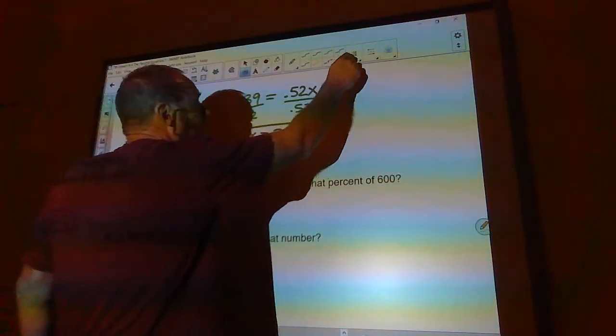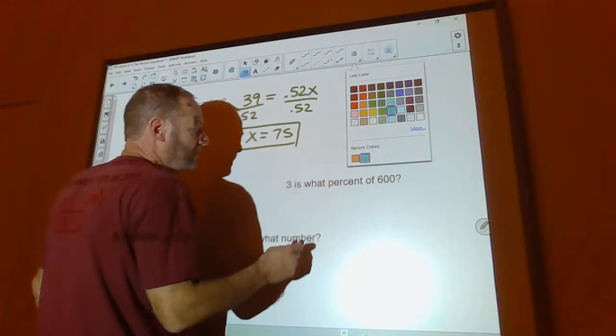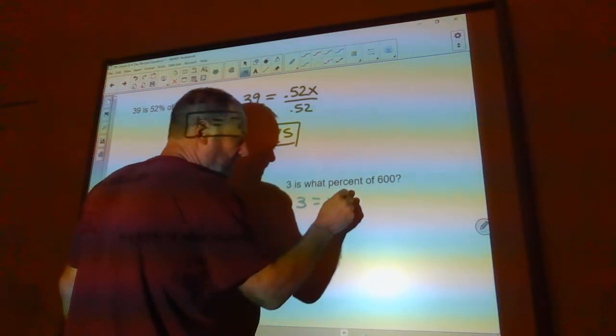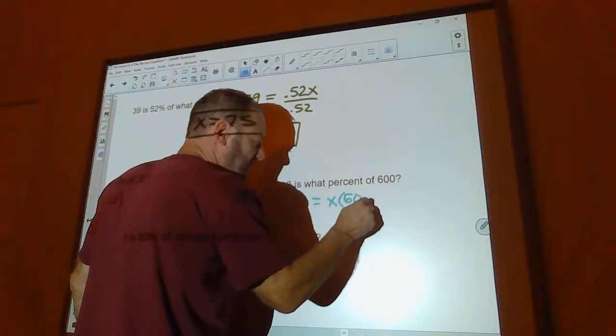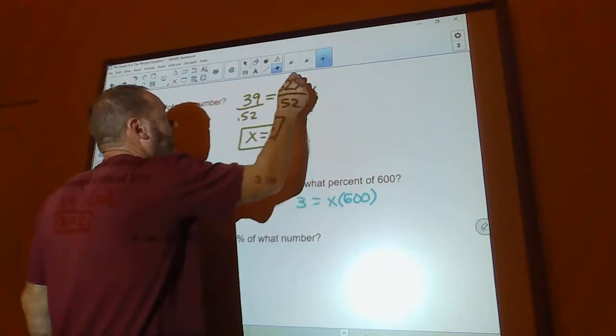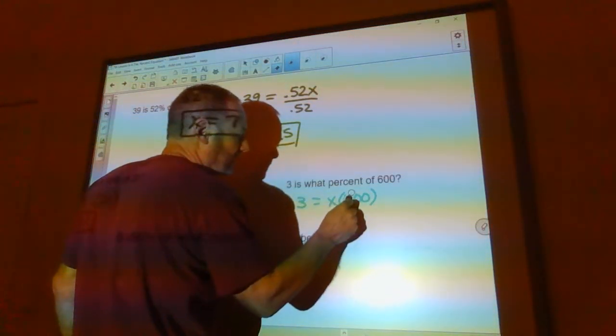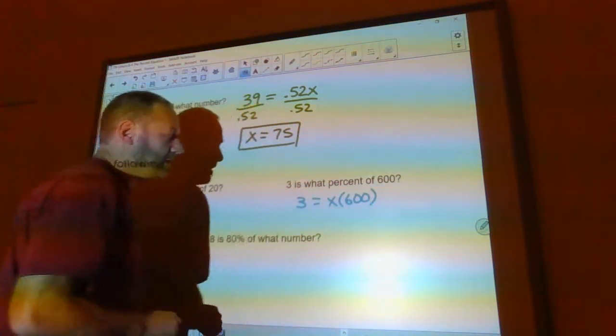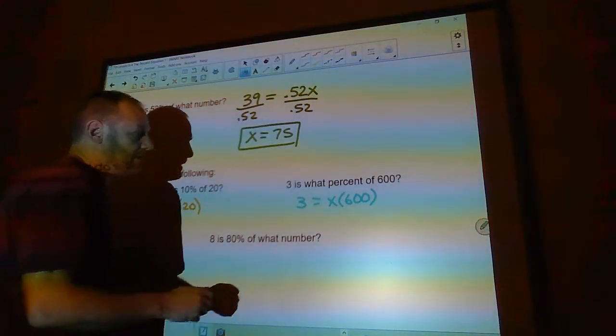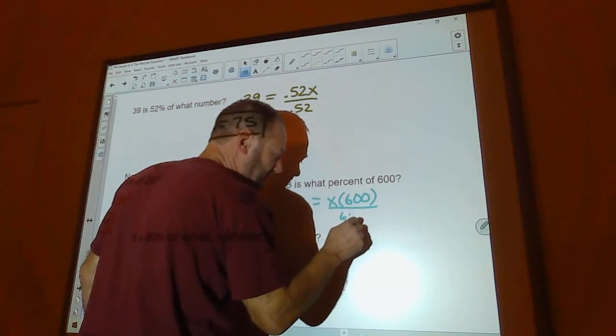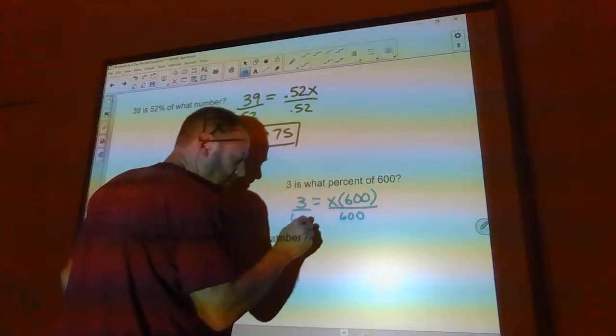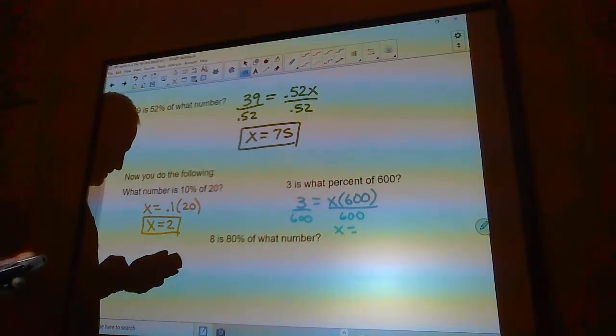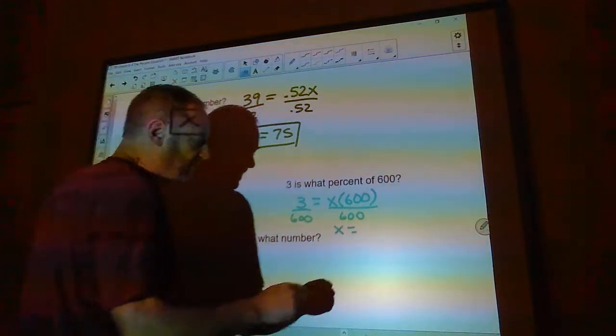Okay, next up. 3 is what percent of 600? And that's an awful 6, so we're going to clean that up. Nobody wants to see that in their notes. There you go. And then I'm going to go ahead and divide both sides by 600. And x will be 3 divided by 600. That would be 0.005.